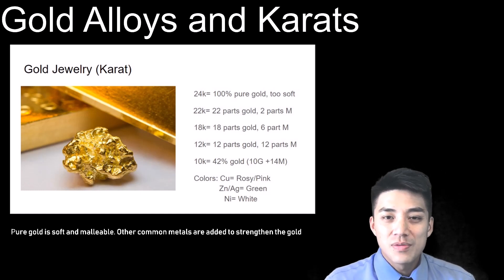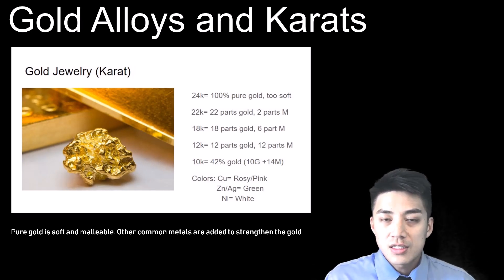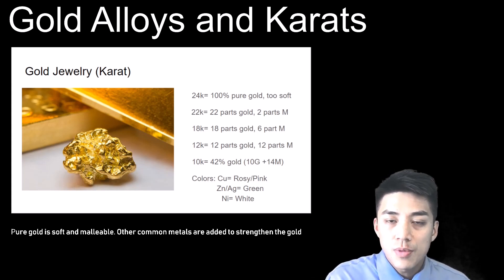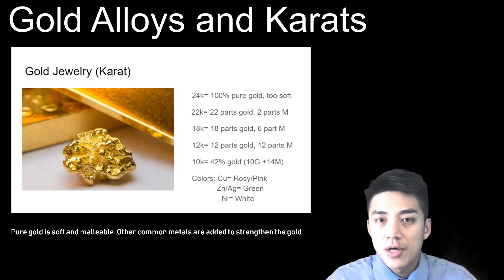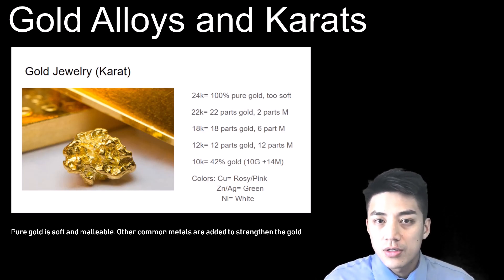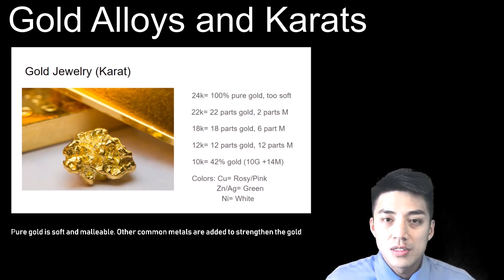Pure gold is too soft and malleable, so typically other common metals are added to make the gold more durable. The carat system measures the purity of gold. It's actually quite simple to understand. 24 carats is the highest form or the highest purity of gold. That's 100% pure gold. 22 carats means it's 22 parts gold, 2 parts of some other metal that's added to make it an alloy. 18 carats means it's 18 parts gold, 6 parts of some other metal. And you can see down there, 12 carats means it's 50% purity because it's 12 parts gold and 12 parts of some other metal that's mixed in.